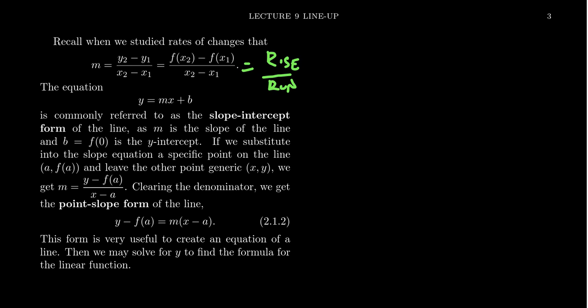You take your change of y, the delta y, over the delta x. That formula doesn't change. What's special about linear functions, though, is that when you start choosing specific y-coordinates, f of x2 and f of x1, it doesn't matter which choice you make. Every choice of x is going to lead to the exact same slope.